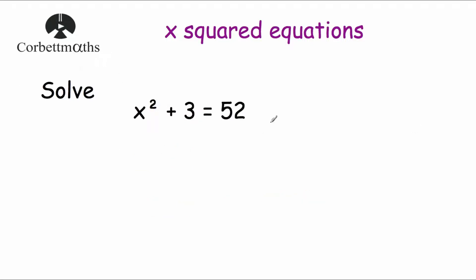Our next question says: solve x squared plus 3 equals 52. We want to find what x is, but we've got this squared term and also this plus 3. Whenever we're solving equations we want to work in reverse BODMAS order — we want to get rid of any addition or subtraction first, then any divisions and multiplications, and then any powers or indices.